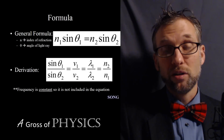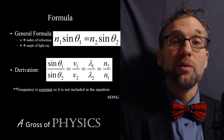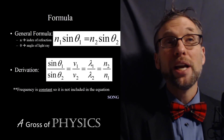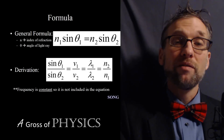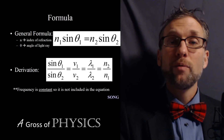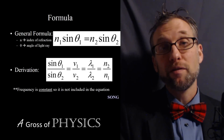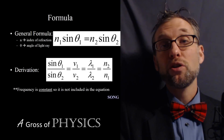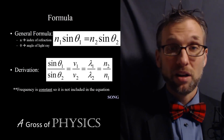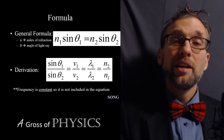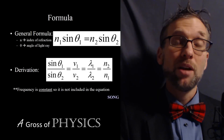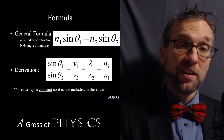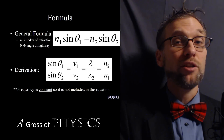We can take Snell's law and combine it with N equals C over V, and even combine it with V equals F lambda, to come up with a big unified equation. It ends up looking like this: sine theta 1 over sine theta 2 equals V1 over V2 equals lambda 1 over lambda 2 equals N2 over N1. You'll note everything is 1 over 2 except N, which is inverted.